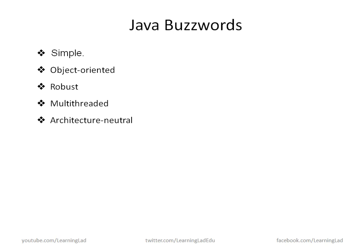The next thing is Java is an interpreted programming language which provides high performance. In Java we convert our source code to something called bytecodes, and then we interpret that bytecode using the JVM — Java Virtual Machine — and execute it. So Java's performance is pretty good. The next thing is Java is a distributed programming language. Java is designed for the distributed environment of the internet because it supports the TCP/IP protocol, and also supports Remote Method Invocation, or RMI, which allows you to access or invoke methods over a network.